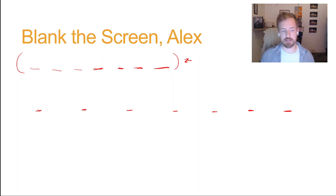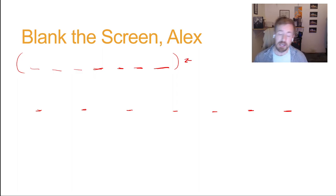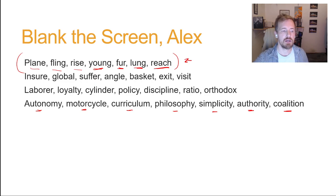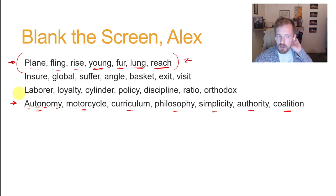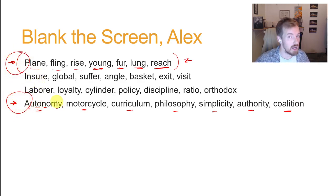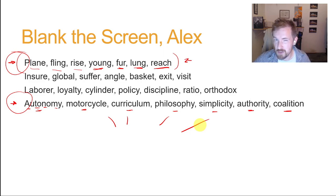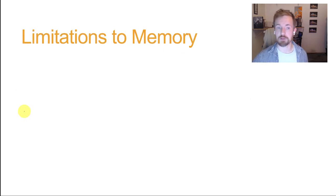I'm willing to bet you were not able to remember all seven of those, and furthermore, you weren't able to remember as many as you did from the first list. What is the difference? The first list was all one-syllable words. The second list was all four-syllable words. So why did we remember more from the first list and fewer from the second? It actually has something to do with how many syllables are in each word.